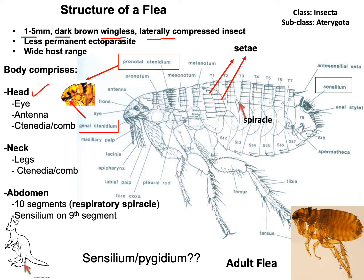The body of the flea comprises three portions: the head, the neck, and the abdomen. On the head region, the first organ is the eye — not a compound eye, but a simple eye. Sometimes instead of the eye there is a photosensitive spot. Next to the eye there is a very tiny three-segmented antenna located on the antennal fossa. On the head region there is also an important structure called the genocomb, which consists of different spines.